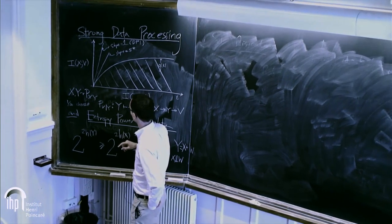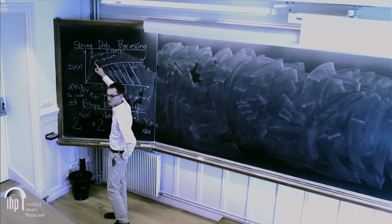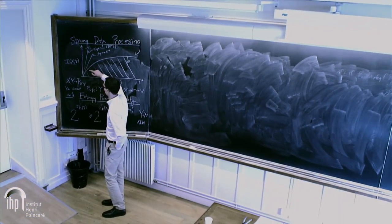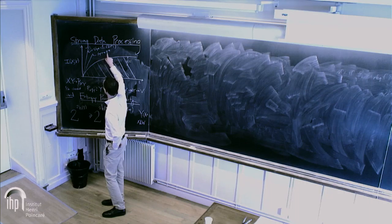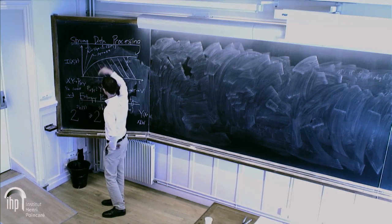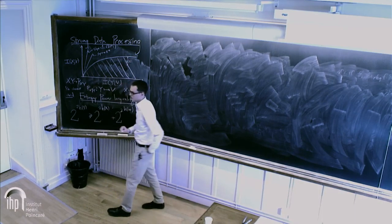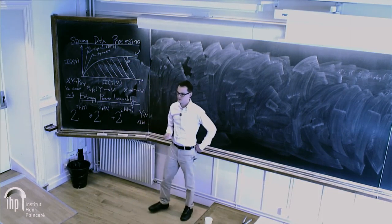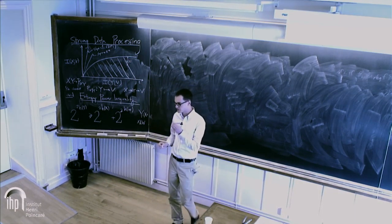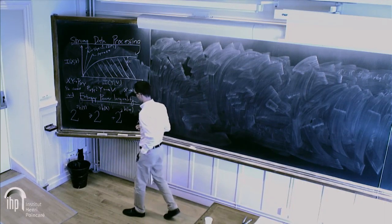Chandra talked about hypercontractivity, which tells us there is a line with some slope s-star strictly less than 1 and the curve lies below it. But what's of interest is characterizing this whole curve, because it gives a fine trade-off between the two mutual informations.